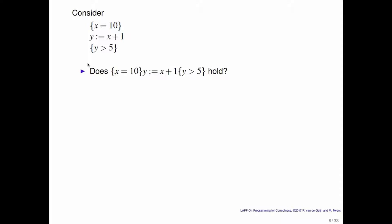Let's revisit homework 2.2.1.1. The first question was whether assigning x plus 1 to y, when started in a state where x equals 10, leaves you in a state where y is greater than 5. Does this Hoare triple hold? We know there is a notion of a weakest precondition. Since x equals 10 is a precondition, if something else is the weakest precondition, then x equals 10 must imply that, or else you won't be able to execute y := x + 1 leaving you in a state where y is greater than 5.